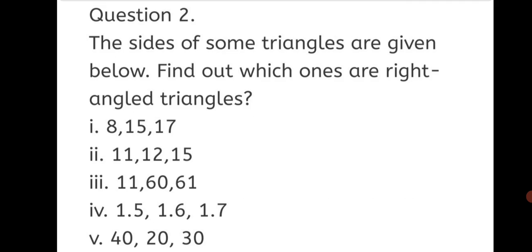Let's move on to Question 2: The sides of some triangles are given below — find out which ones are right-angled triangles. While looking at the sides, we can detect whether it is a right-angled triangle using Pythagorean triplets. If the given triplet is a Pythagorean triplet, then it is a right-angled triangle.